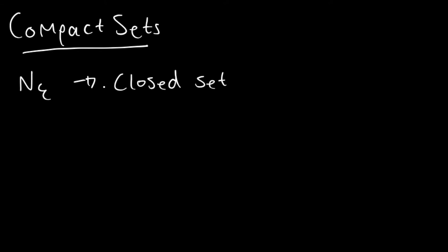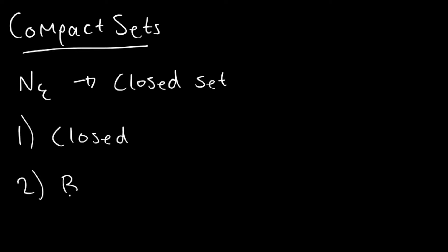When it comes to a compact set, the definition is pretty simple. The first requirement is that the set is closed, and the second requirement is that it is bounded. Once a set is both closed and bounded we can say that it is compact. So we're going to go over what a closed set is and what a bounded set is, and any set that satisfies both requirements is a compact set.